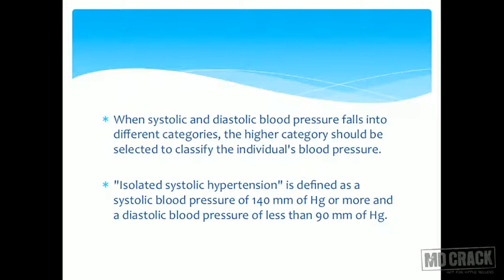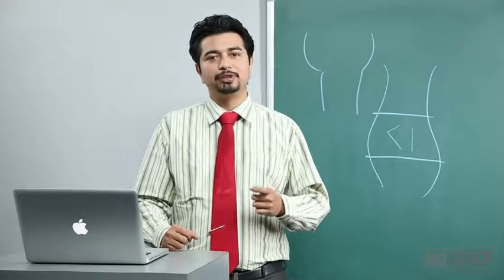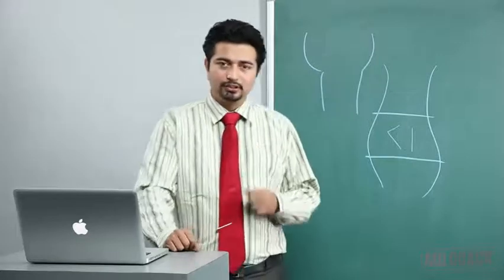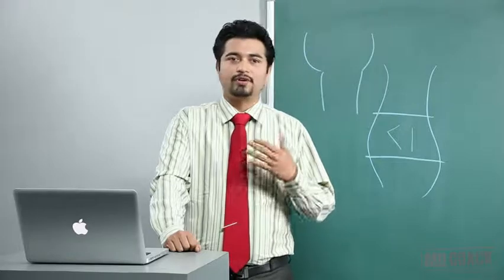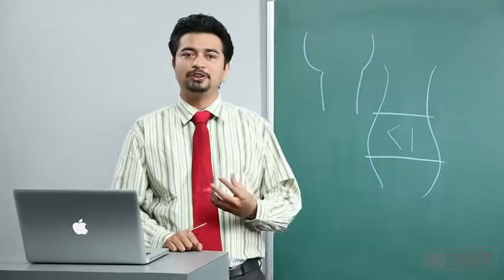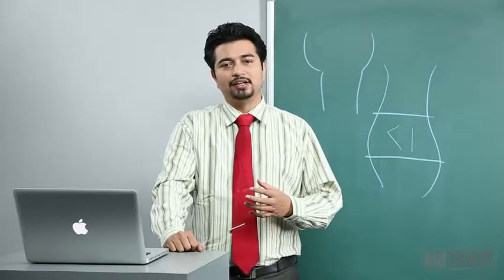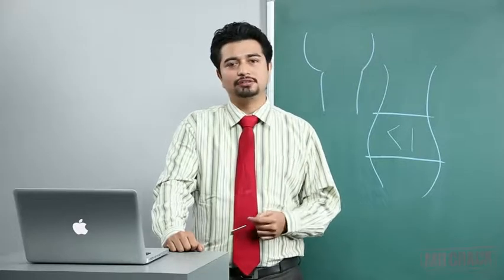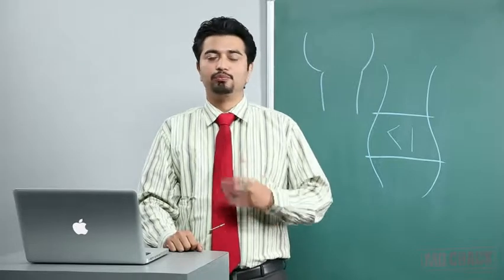Coming to the measurement of blood pressure. The patient must be in a sitting position, not supine. WHO says you can have a uniform policy of measuring blood pressure in either the right or left hand. It is recommended to take blood pressure on the left hand always, because most of the population uses their right hand, leading to muscular hypertrophy which may cause a falsely decreased reading. The blood pressure cuff should be at the level of the heart — not above or below.